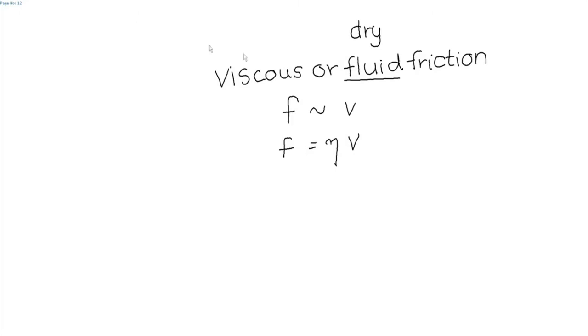A student asks whether friction depends on the velocity of the body during motion. For dry or Coulomb friction, the frictional force between two moving surfaces does not depend on velocity. There are other models for certain contacting surfaces — called fluid friction — where friction can depend on velocity, but in the dry or Coulomb friction model used in engineering mechanics, the contact force depends only on the normal reaction, not on velocity.